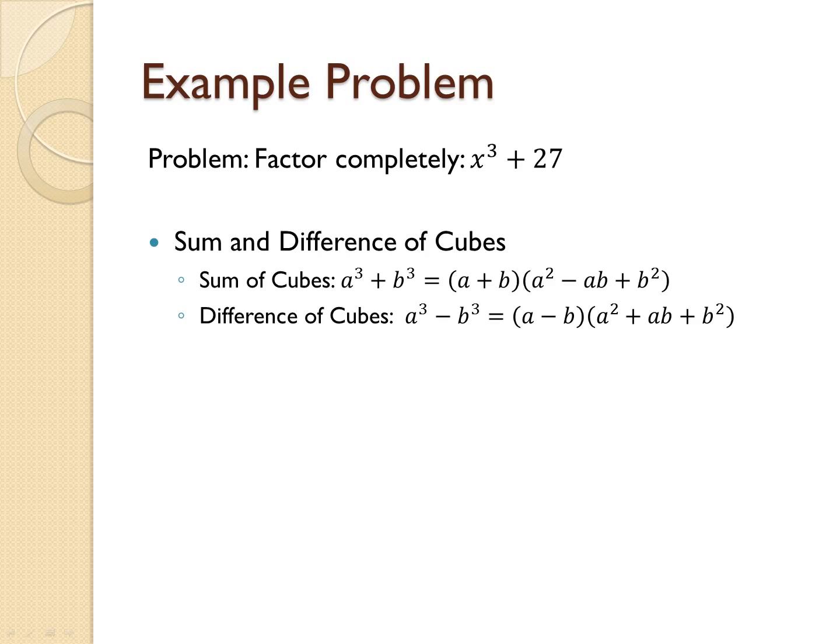Now that we know what the sum of cubes formula is, we can now factor this problem. In doing so, we will find that a equals x and b equals 3. Thus, our factored result is x plus 3 times x squared minus 3x plus 9.